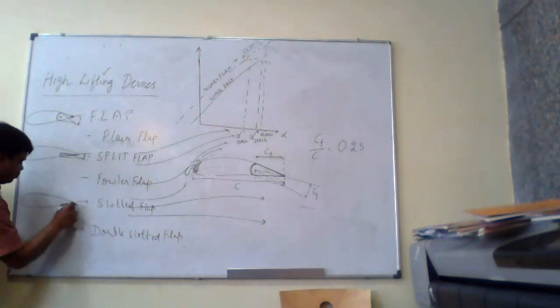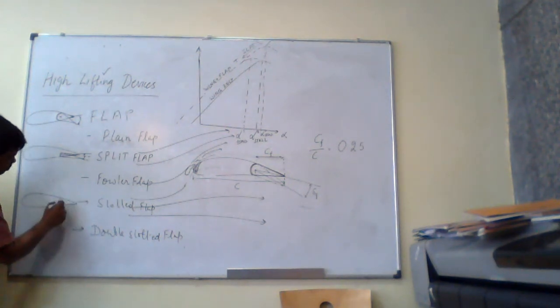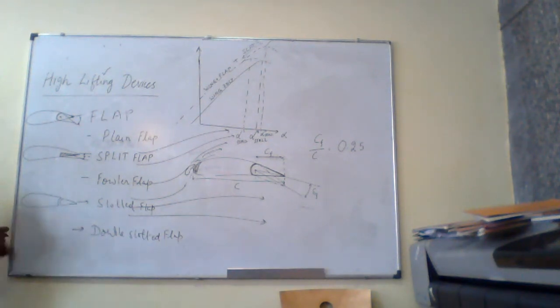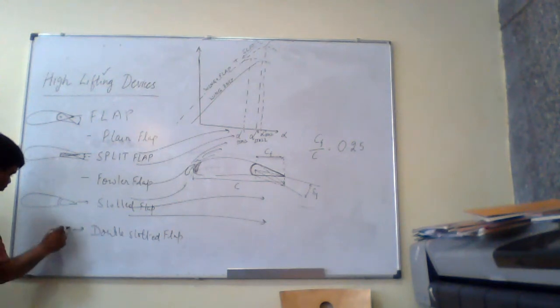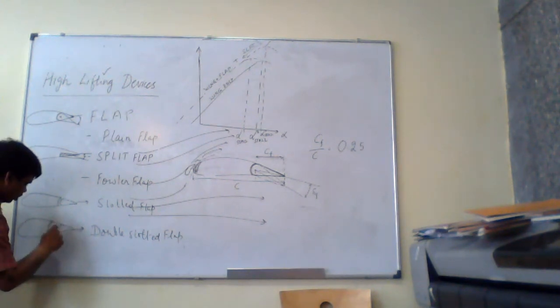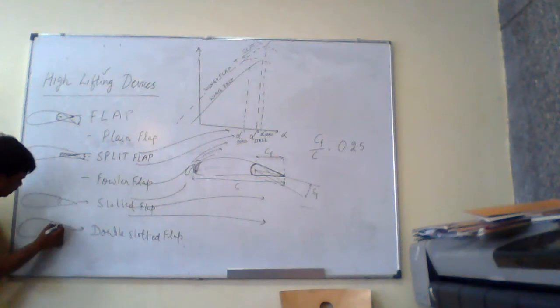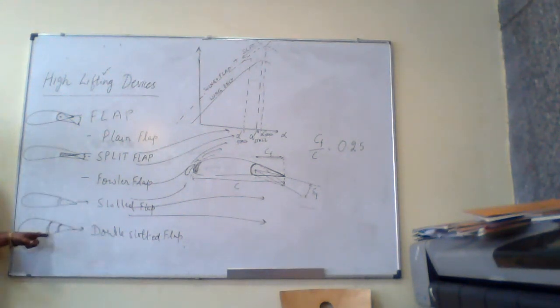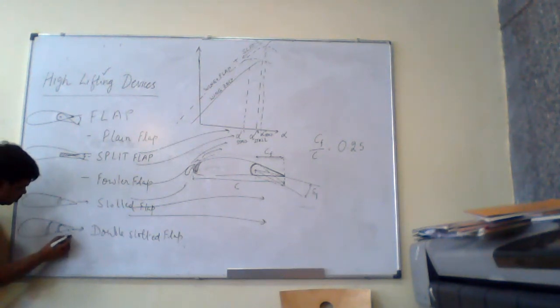Before fowler flap, let's say slotted flap. What happens? This plain flap, inside there is a slot. Then there is double slotted flap, you have double slot. What happens? Now this slot is in terms of shape S, so that when you extend, this portion will be a deflective flap. So there will be gaps.